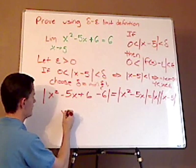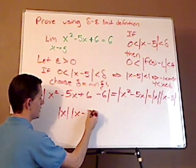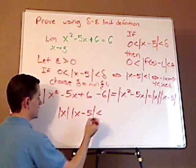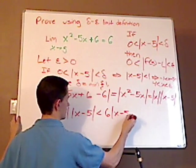So, you have |x| times |x minus 5| is less than 6 times |x minus 5|.